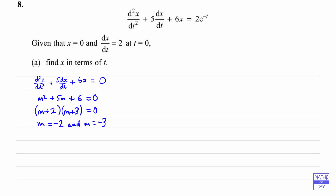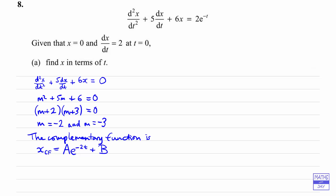So we can say that the complementary function is — because it's the complementary function I'm going to put CF here — so x is going to be some constant, which we'll have to find, times e to the power of — now one of our solutions will come in here — so minus 2t, so that's a·e^(−2t) where a is a constant. And then the other constant we'll call b, and this is where we'll have our other root, which was minus 3, so that's b·e^(−3t). The solutions to the auxiliary equation are the coefficients of the t's in the powers of e.